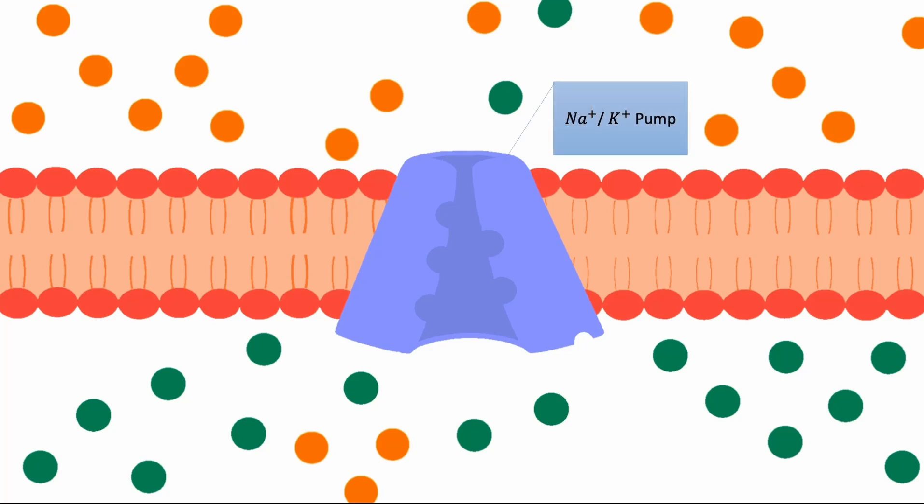The sodium-potassium pump diligently regulates intracellular ion concentrations, sustaining a low level of sodium ions and a high level of potassium ions within the cytosol.